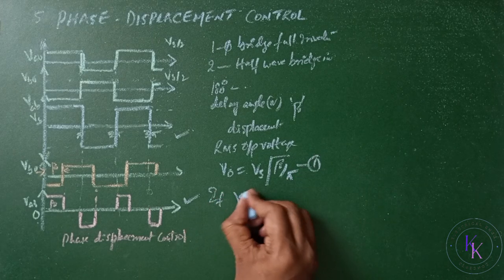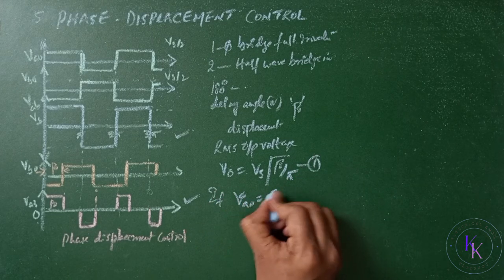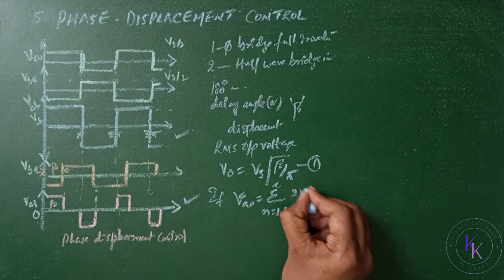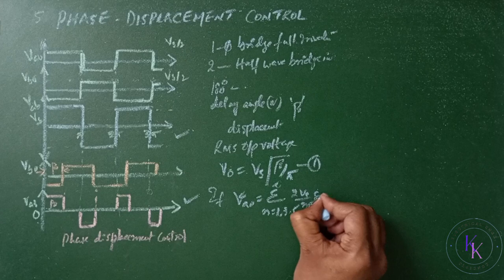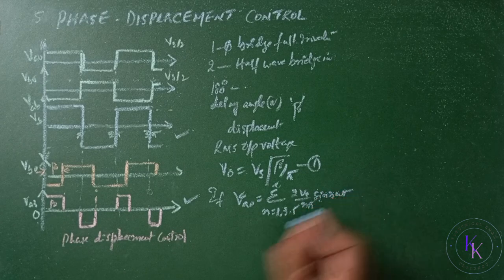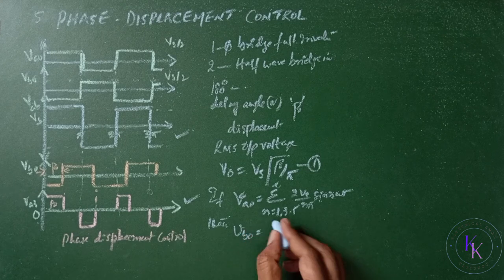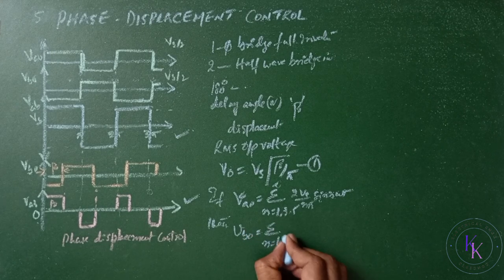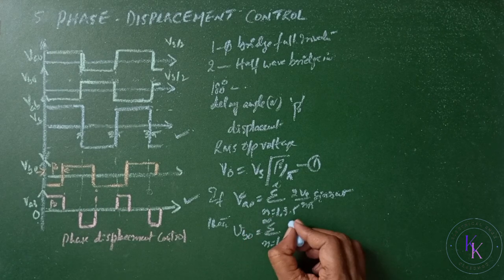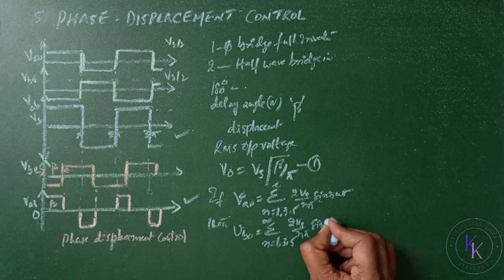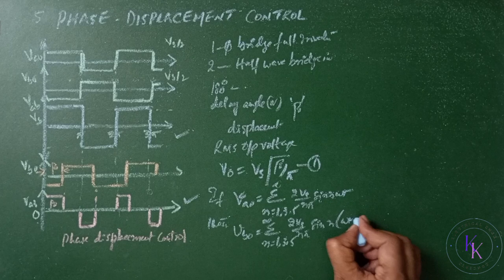If VA0 equals sigma n equals 1, 3, 5 to infinity, 2Vs by n pi sine n omega t minus beta.